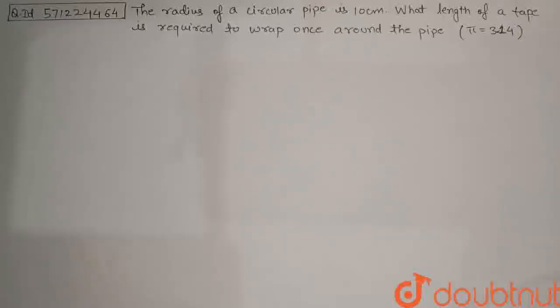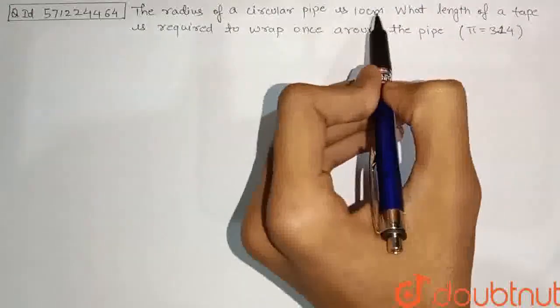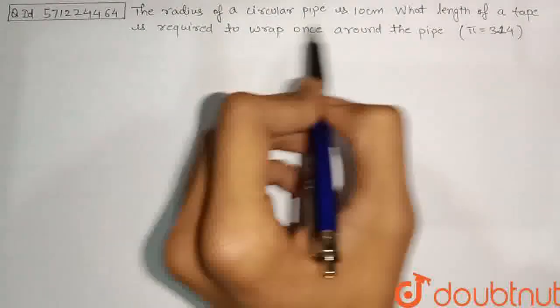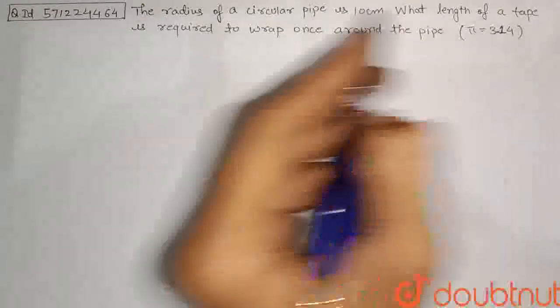Hello students, let's discuss the question. The radius of a circular pipe is 10 cm. What length of a tape is required to wrap once around the pipe? And pi is given as 3.14.